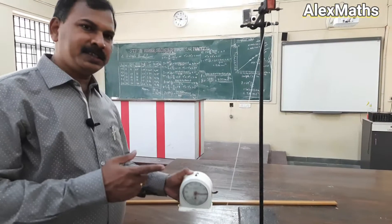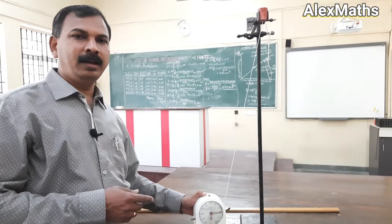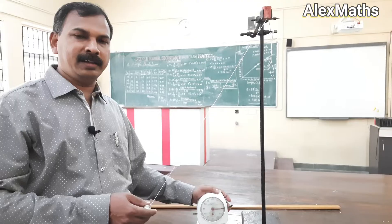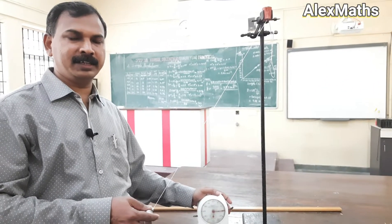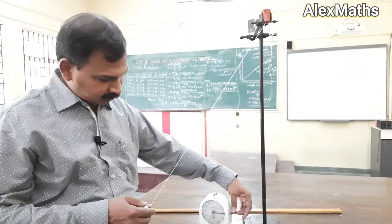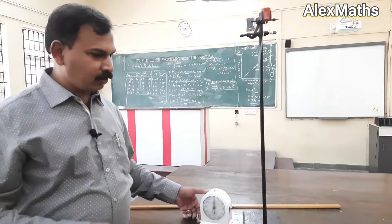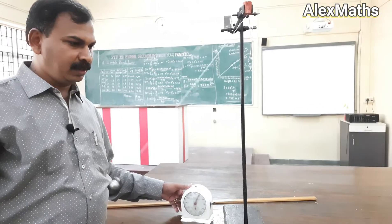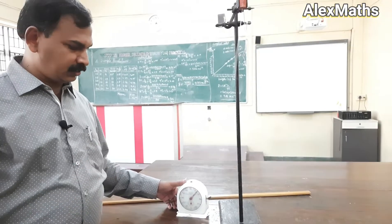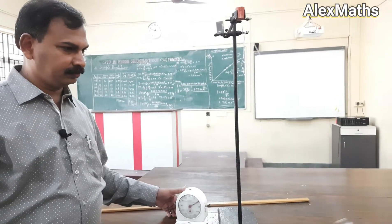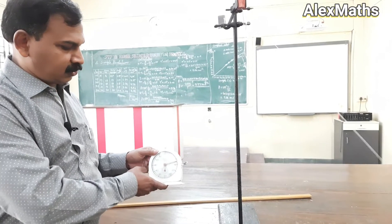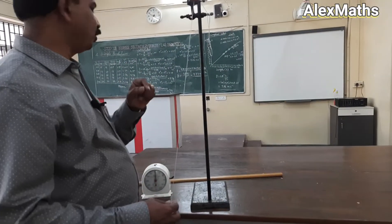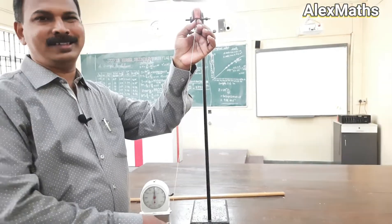Physics needs accuracy, so repeat the trial one more time. Reset the clock using the knob, make the pendulum oscillate again, go for 10 oscillations, and find out the time taken. Once you get 10 oscillations, stop. Trials 1 and 2 are now over for 0.6 meter, that is 60 centimeters.